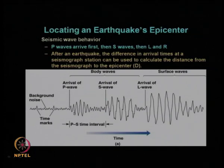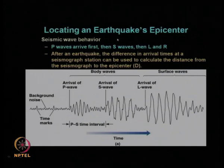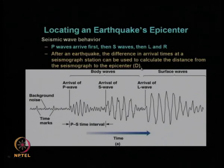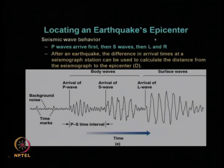Unless the seismograph station is far away from the epicenter, you will hardly be able to identify the distinct arrival time of surface waves like Love wave and Rayleigh wave. We are going to use the available information of arrival time difference between S wave and P wave for locating the earthquake's epicenter. In the previous lecture, we have seen how to use this difference of arrival time to calculate the distance of the epicenter from the seismograph station.